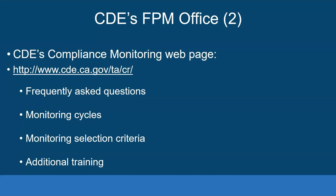Here is the link to the compliance monitoring web page. This is the FPM office resource where you can learn more about the process. There are frequently asked questions, monitoring cycles — all K-12 agencies are on a two-year cycle — information about the criteria used to identify which agencies will be scheduled for review, and links to additional training. These are the types of resources available to you at this link.